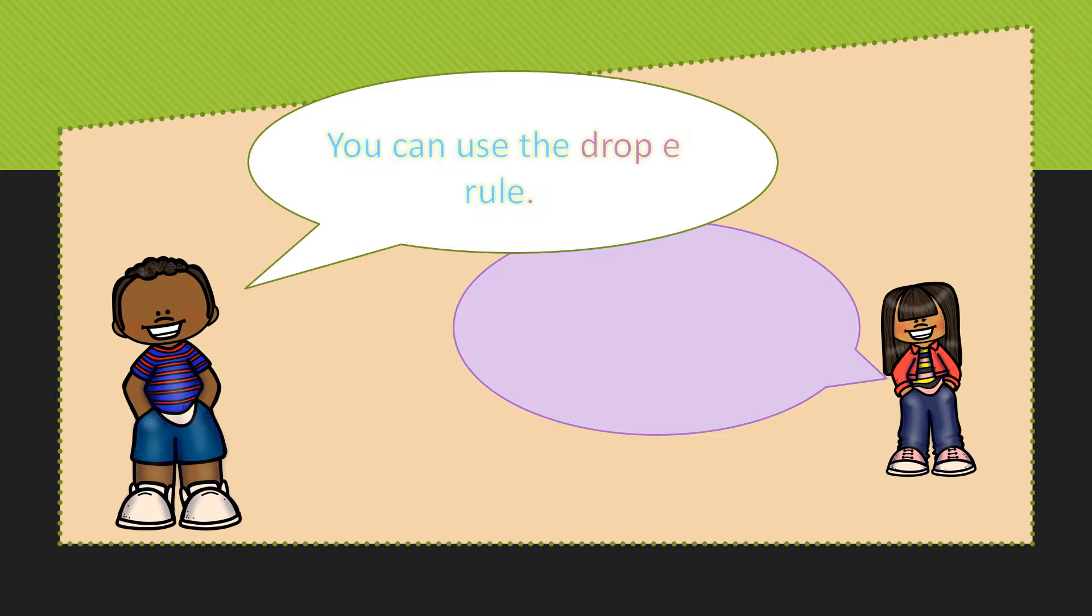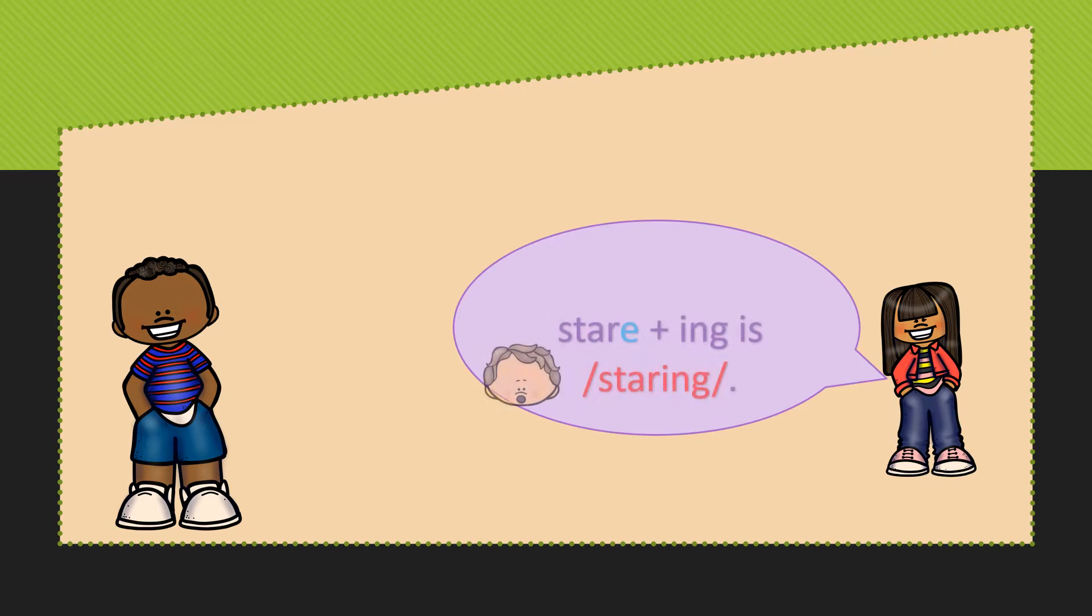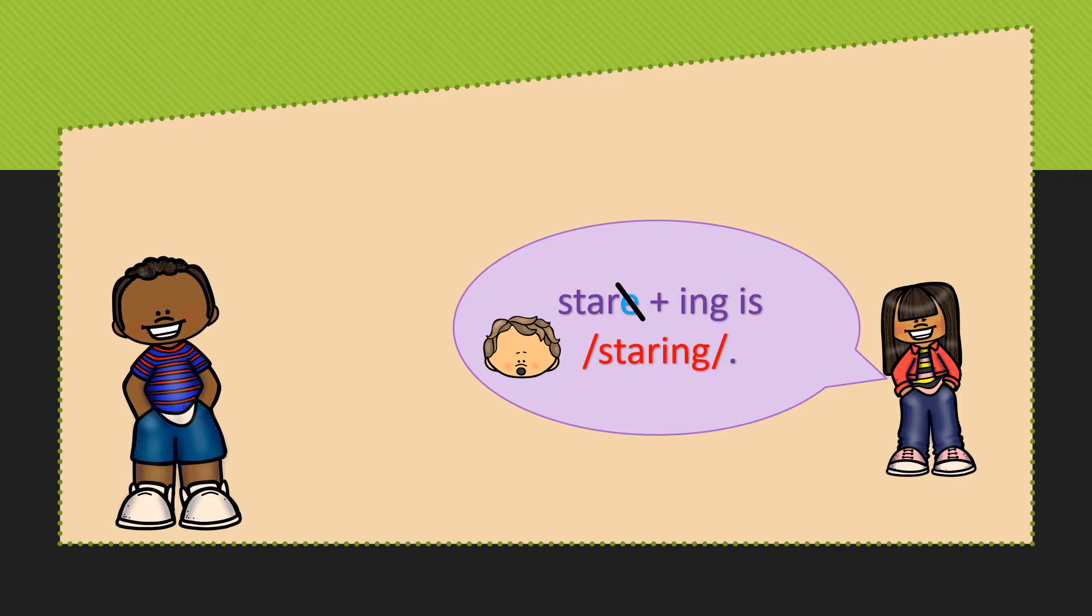You can also use the drop E rule with an R controlled word and a suffix. Here we have the word stare. Stare has a silent E at the end and I'm adding a suffix, I-N-G. I need to drop the silent E before I add the I-N-G. Stare becomes staring.